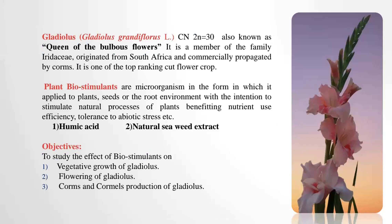This is the gladiolus flower variety, cultivar Punjab Don. The scientific name of gladiolus is Gladiolus grandiflorus. It comes under the family Iridaceae. It originated in South Africa and is commercially propagated by corms. It is also called sword lily due to its sword-shaped leaves, and it is one of the top-ranking cut flower crops.